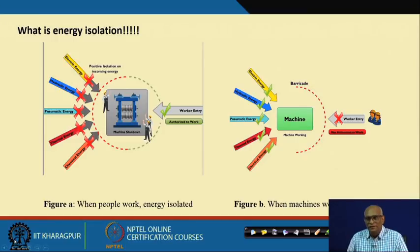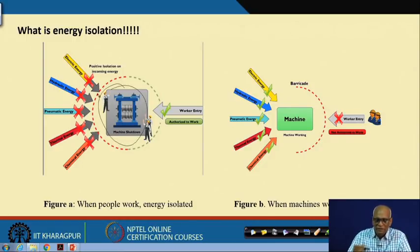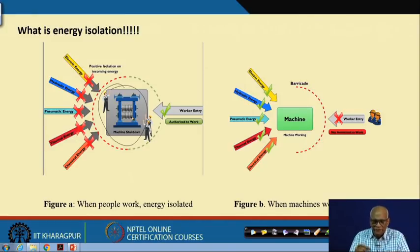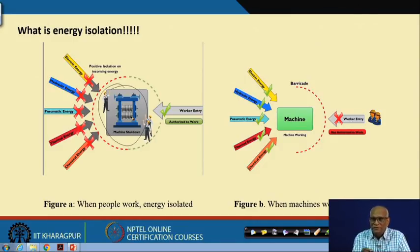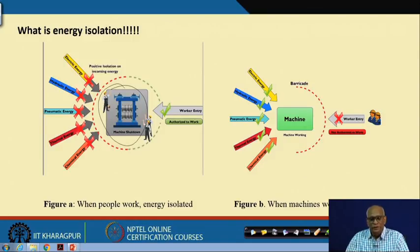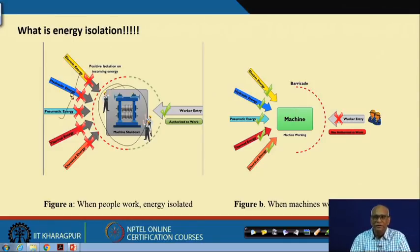Look at the industrial scenario — in any scenario you have machines. Many times people have to work on machines, processes, or equipment. But these machines or processes may have many energies coming into them — there could be electric energy, hydraulic energy, pneumatic energy, thermal energy, chemical energy, and gravitational energy.